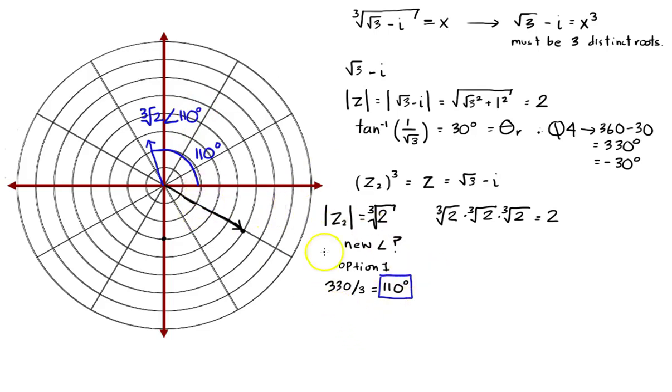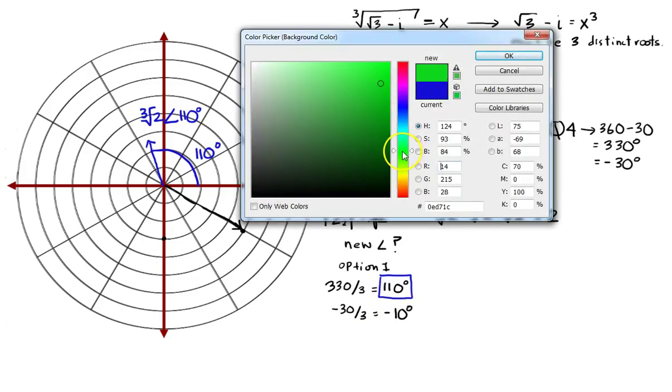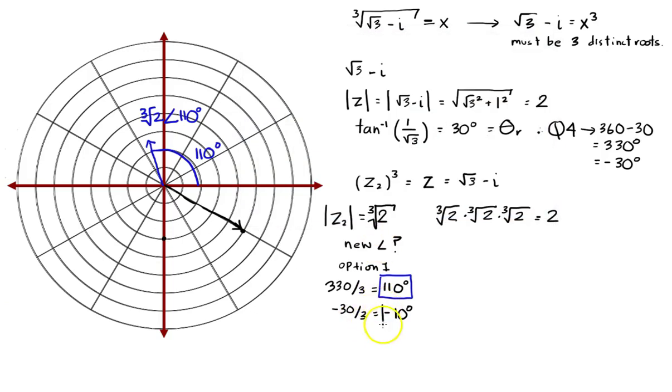Next one. So I could also go in the opposite direction and say, well wait a minute, let's look at negative 30 divided by 3. That gives me negative 10 degrees. Well, let me get another color here, I'll go with a nice green. So negative 10 degrees. That's my next solution. It'll be cube root 2, probably about something like that. And there's my angle right there. And that will be cube root of 2 angle negative 10 degrees.